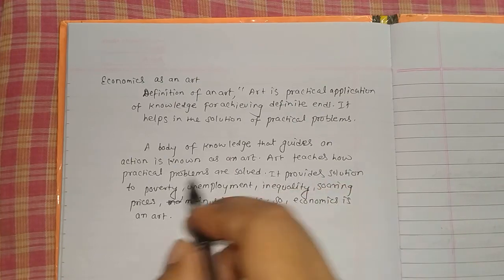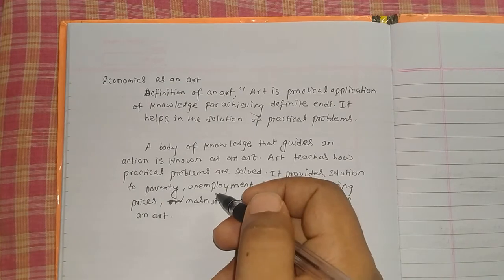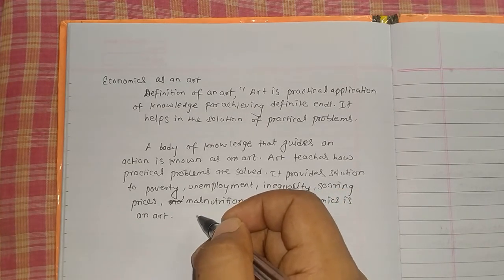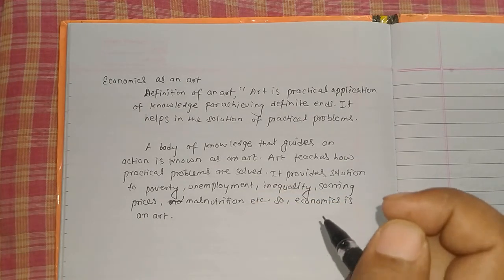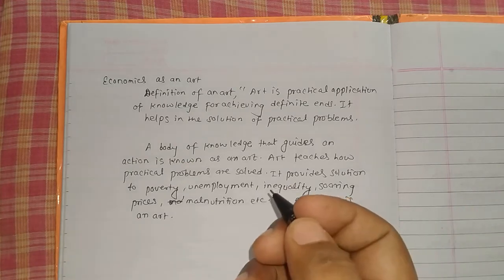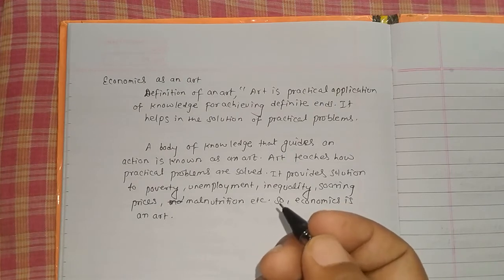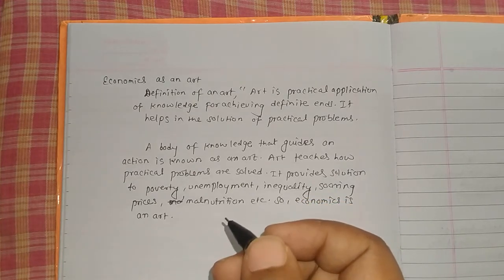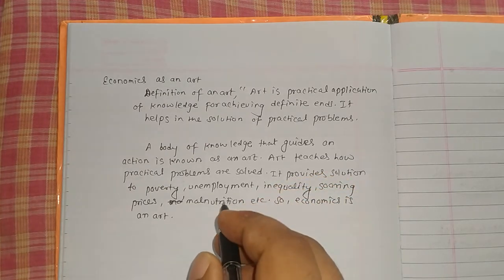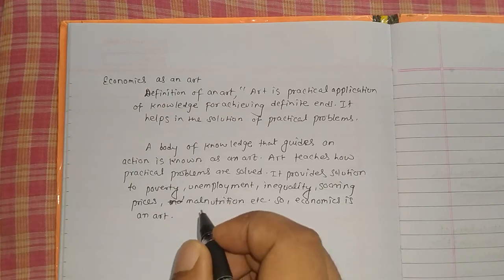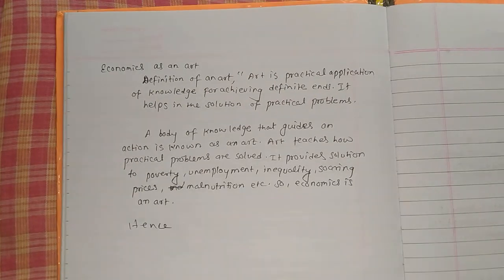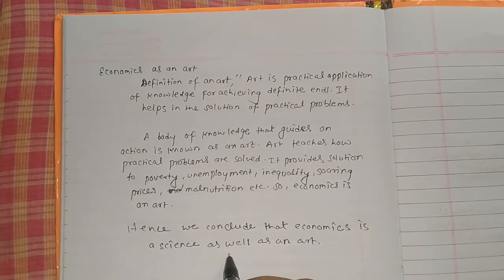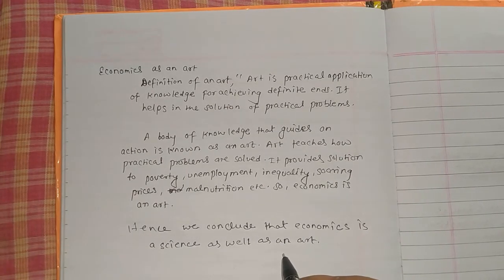Art teaches us how practical problems are solved. It provides solutions to problems such as poverty, unemployment, inequality, soaring prices, malnutrition, etc. Economics also provides solutions to problems that arise in society, and art also provides guidance toward solutions. Since both requirements are fulfilled, we conclude that economics is both a science and an art.